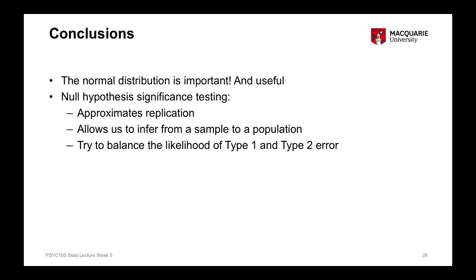We also talked about two different kinds of errors — two different kinds of mistakes we can make — the Type 1 and the Type 2 error. The p-value itself is our likelihood, our probability, of having made a Type 1 error. What we're trying to do in research is to not make either of these two errors, but the difficulty is that we never know if we actually have made either a Type 1 or a Type 2 error. All we can get information about is how likely it is that we've made a Type 1 or a Type 2 error.